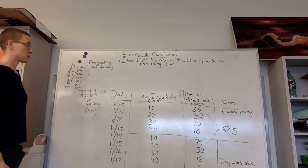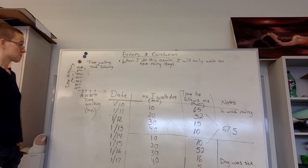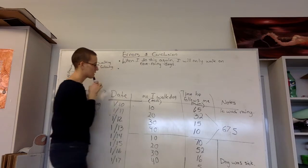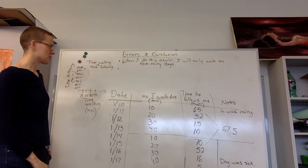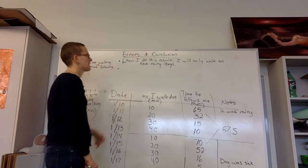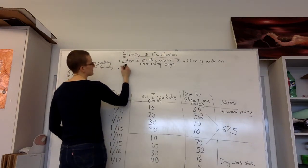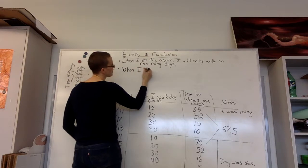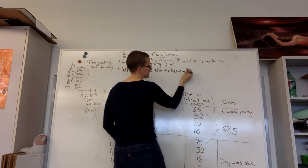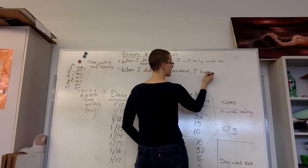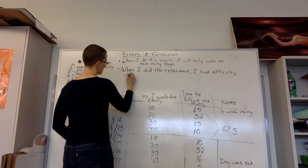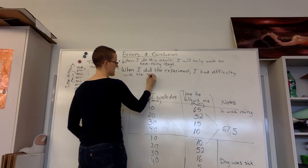Another thing that I would make sure I did differently is be a little bit more conscious of the accuracy of my numbers. So I was pretty good with minutes. But when I actually did the experiment, I found that sometimes I wasn't so good at keeping track on the stopwatch and I had to go back and estimate. So when I did the experiment, sometimes I had difficulty with the stopwatch and had to estimate some numbers.